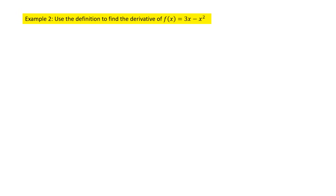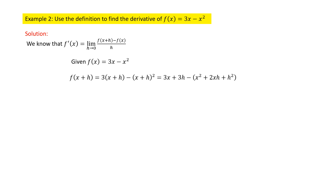Let us see one more example. Find the derivative of the function f(x) = 3x − x² using the definition. Let me write the definition and then the function f(x) = 3x − x². Now I need to calculate f(x+h). As you see the function, there are two x's — one x here and another x here. So I need to change both x's to x+h, giving me 3(x+h) − (x+h)².